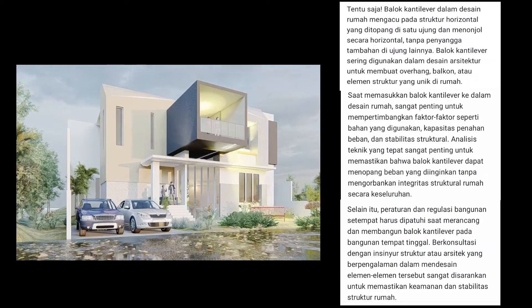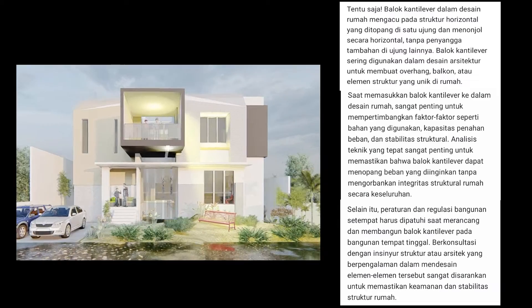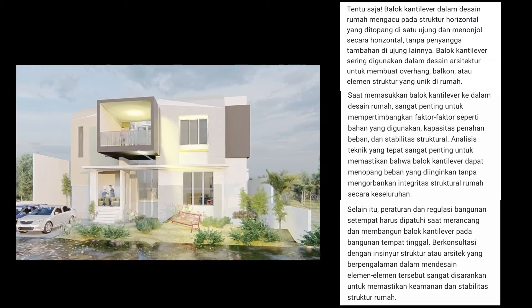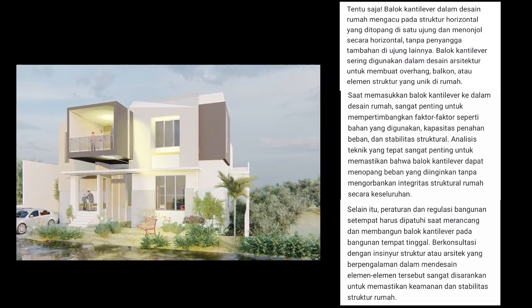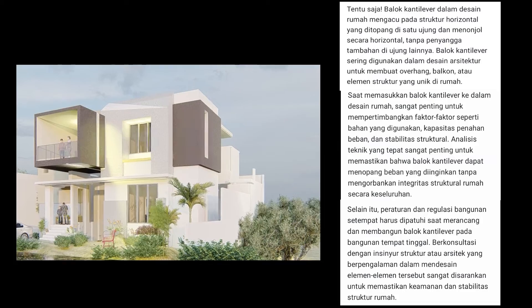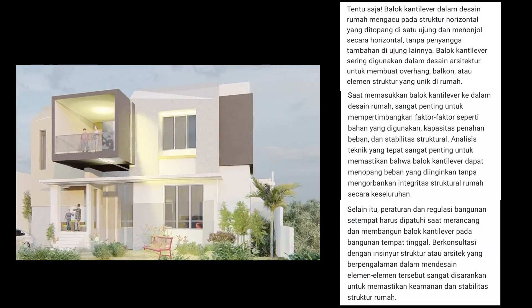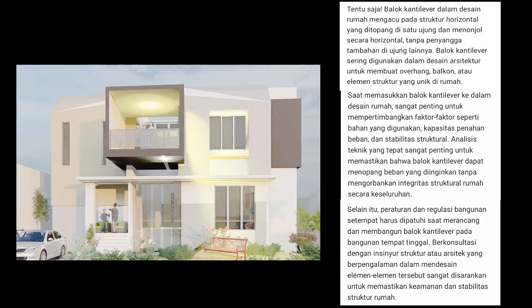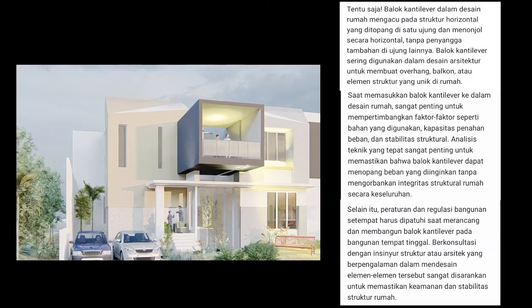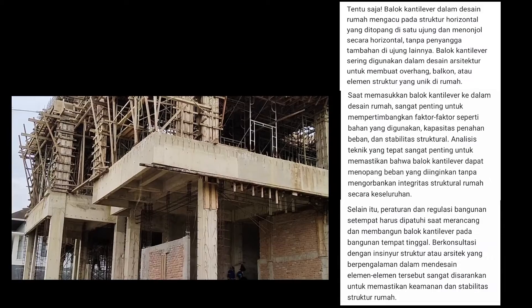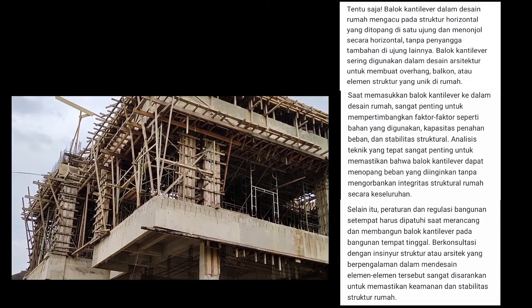A cantilever beam in house design refers to a horizontal structure that is supported at one end and protrudes horizontally, without any additional supports at the other end. Cantilever beams are often used in architectural designs to create overhangs, balconies, or unique structural elements in houses.